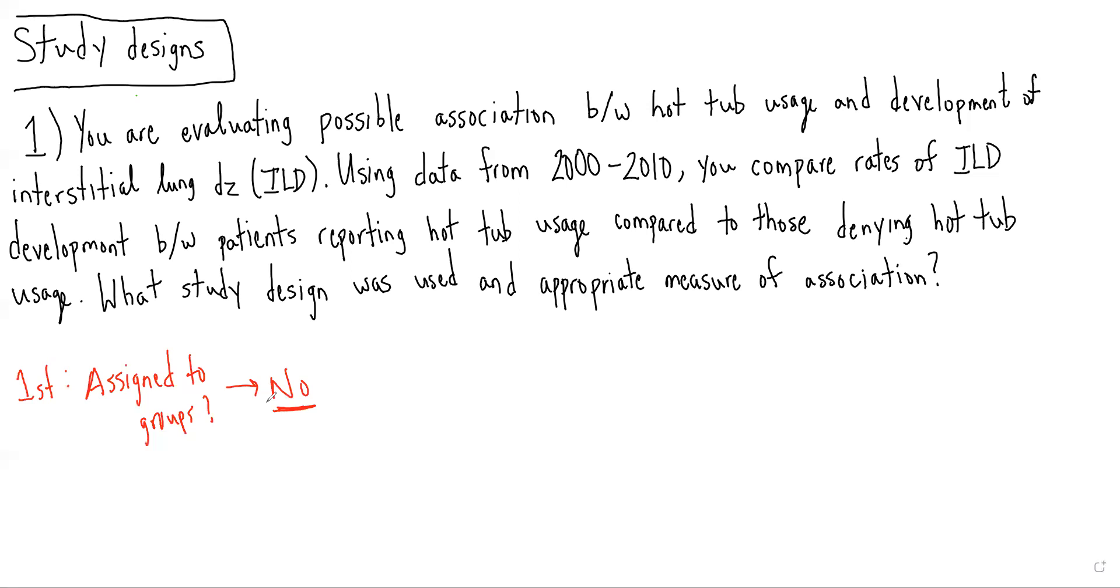The observational study designs are cross-sectional study, cohort study, or case control. So we ask: how are patients grouped? In this case, we see the two patient groups are those with hot tub usage (exposure positive) and those without hot tub usage (exposure negative), and we're asking how many develop ILD.